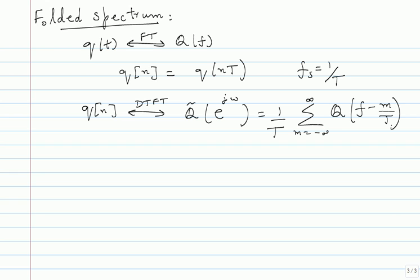To relate discrete and continuous time, think of omega as 2 pi f T, where F is the continuous frequency. Your continuous frequency and discrete time frequency are related like this, or you can write it as 2 pi F over Fs. So F over Fs is the normalized frequency in the discrete time domain. This Q tilde is periodic with period 1 over T in F, which results in the periodicity for Q of e power j omega.